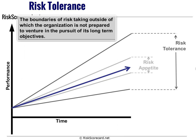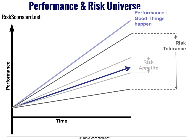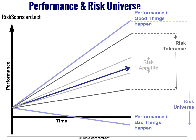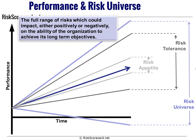There's also the overall risk universe — the total galaxy of what could happen if everything good occurred or everything bad occurred. That risk universe defines the upper and lower most parameters.